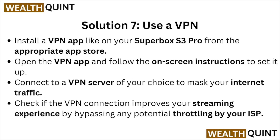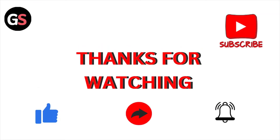Solution number seven is use a VPN. Install a VPN app on your Superbox S3 Pro from the appropriate app store. Open the VPN app and follow the on-screen instructions to set it up. Connect to a VPN server of your choice to mask your internet traffic and check if the VPN connection improves your streaming experience by bypassing any potential throttling by your ISP.